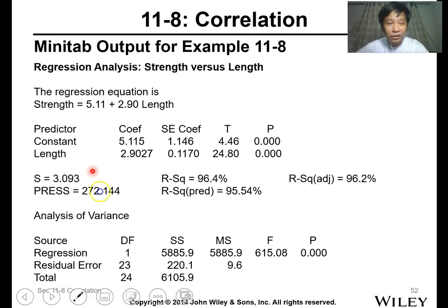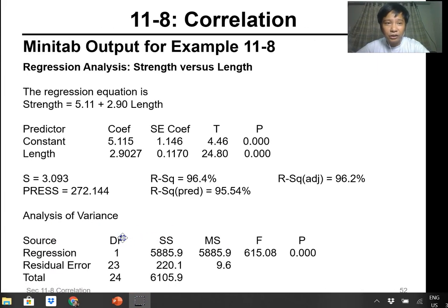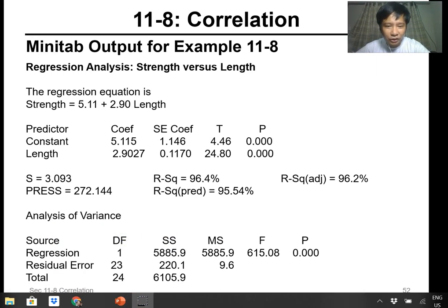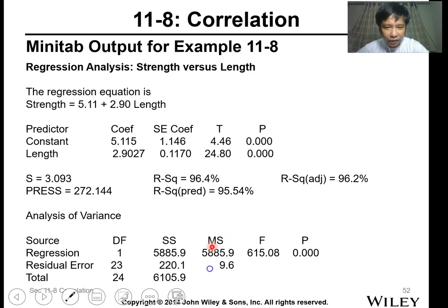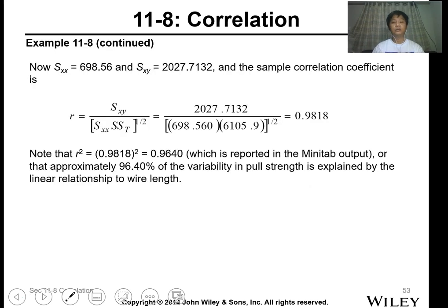So this is the analysis of variance, you can see it. This is the degrees of freedom, 25 is the sample, so degrees of freedom is 24. We have two variables, so one for the regression. For the residual error, 25 minus 2. So SS, this is the SS, this is the error, this is the SSR, this is the SST, MS, and your F value.